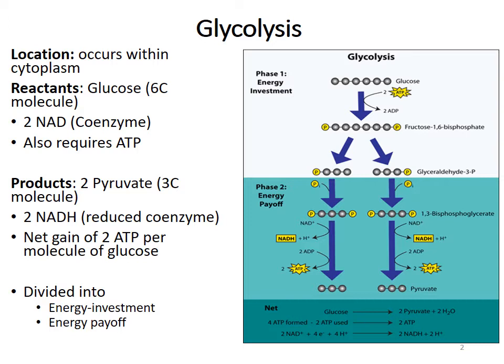In glycolysis, we end up producing 2 pyruvate, which are three-carbon molecules, 2 NADH, which are reduced coenzymes, and we get a net gain of 2 ATP per molecule of glucose that goes through glycolysis.